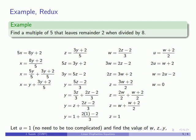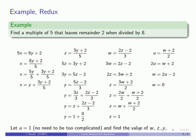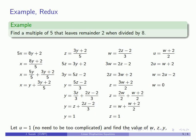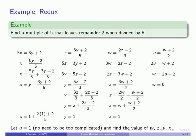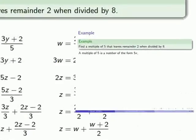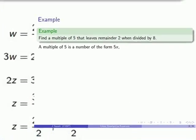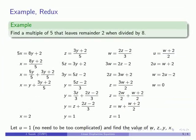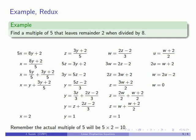With z equals 1, substituting into the equation for y gives y equals 1. Substituting y equals 1 into the equation for x gives x equals 2. The actual multiple of 5 we're looking for is 5 times x, so 5 times 2 equals 10 is again our solution.